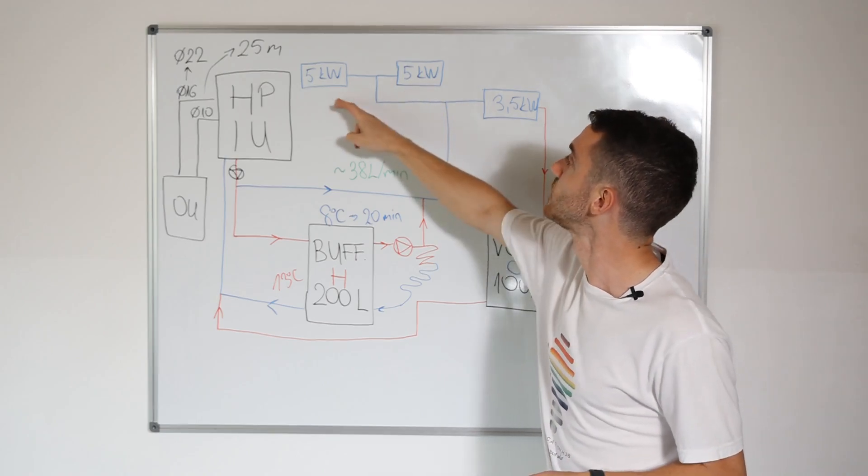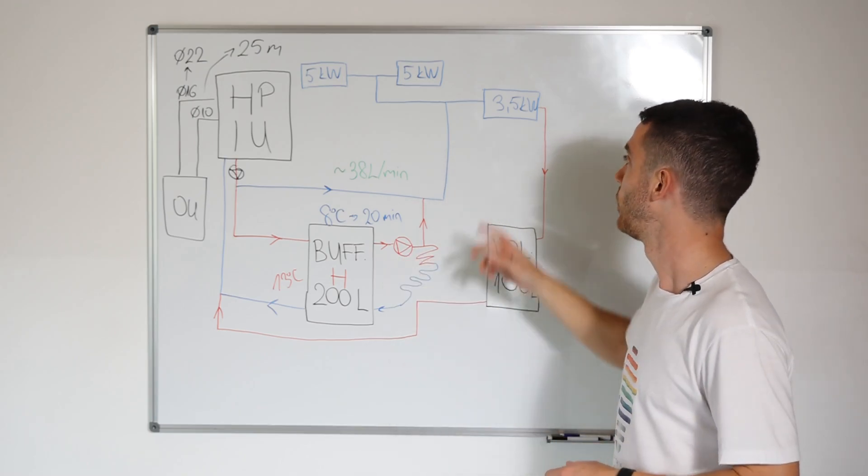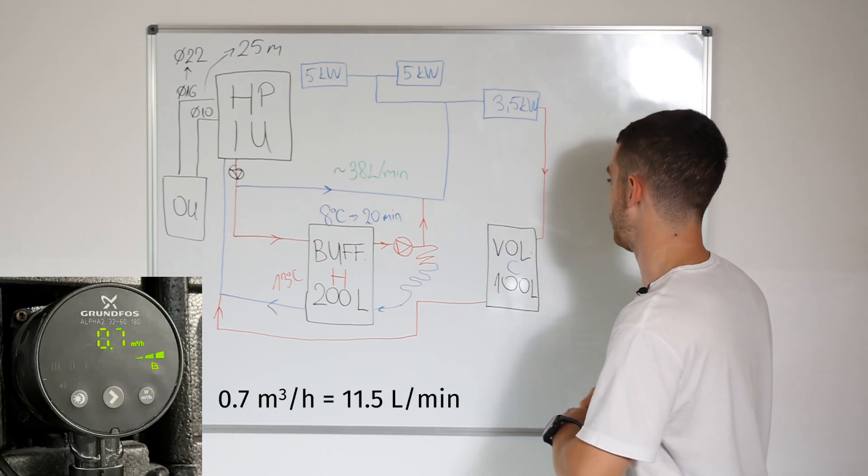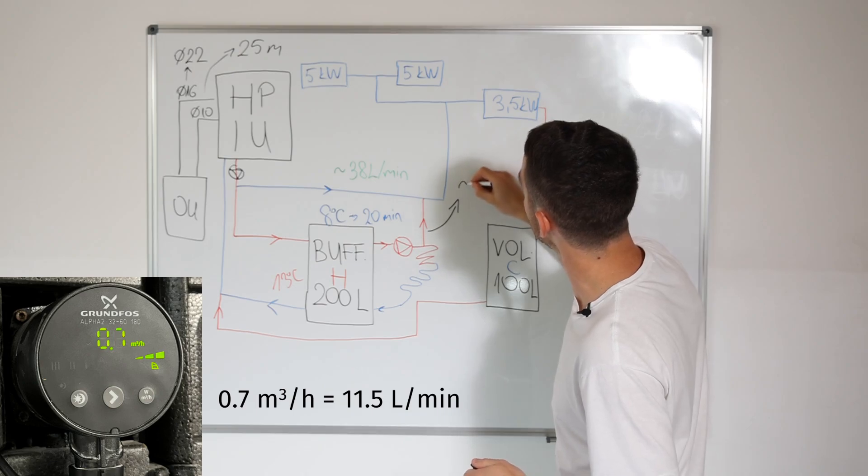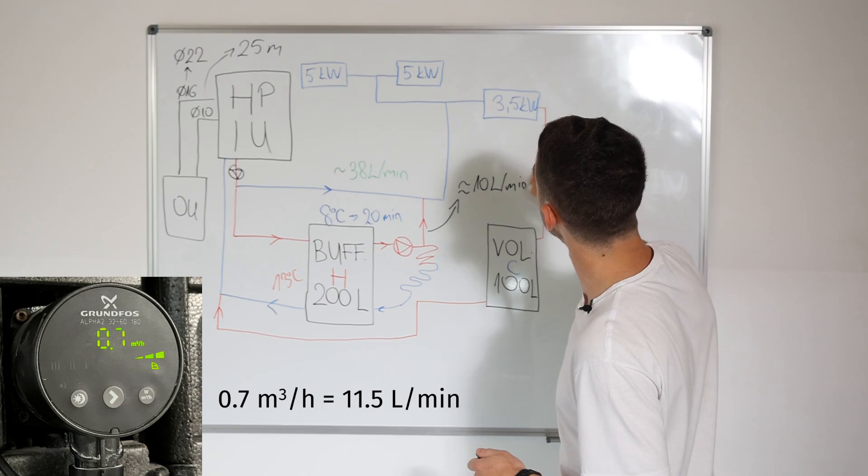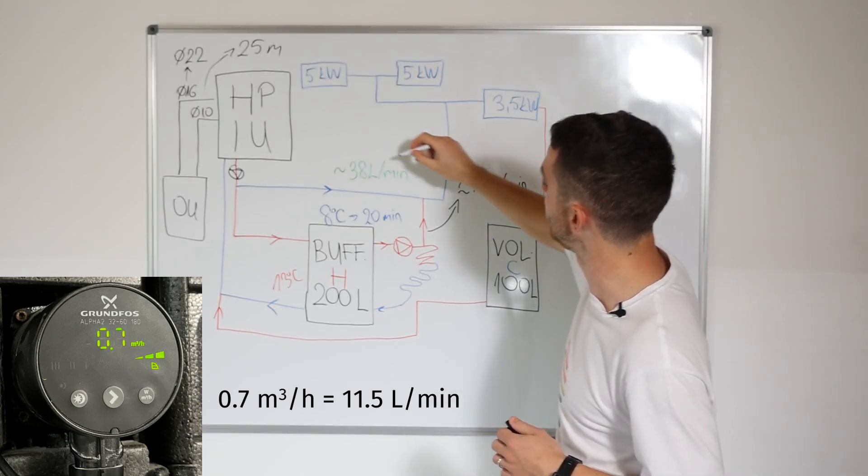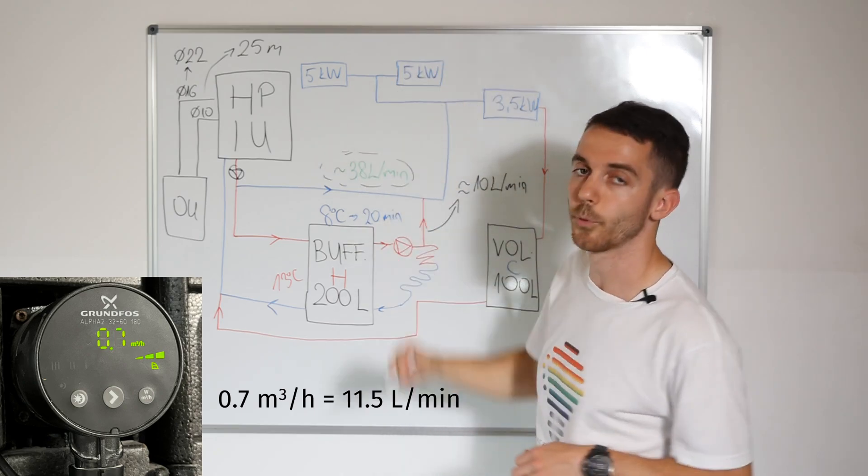When we put, when we turn on these two, it's not working. And on Grundfos pump, when all three were on, we can see that flow rate here is around 10 liters per minute. So this is enough for one fan coil for 3.5. What we need, we need 38 liters per minute for 13.5 kilowatt.